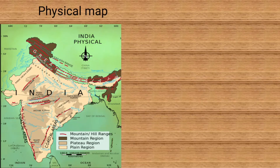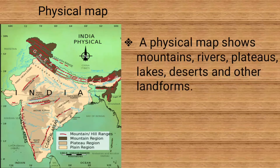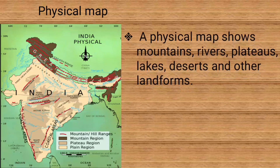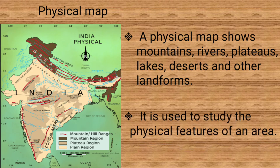Physical map. A physical map shows mountains, rivers, plateaus, lakes, desert and other landforms. It is used to study the physical features of an area.